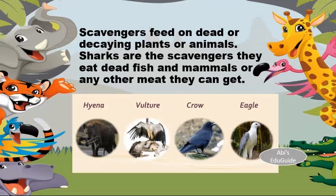Scavengers feed on dead or decaying plants or animals. Sharks are scavengers — they eat dead fish and mammals or any other meat they can get. Hyena, vulture, crow, eagle, etc. are examples of scavengers.